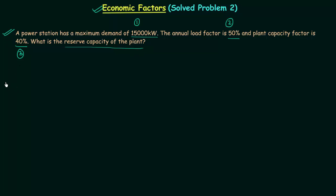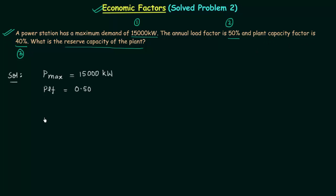First, I will write down the given information. The maximum power Pmax is 15,000 kilowatt. The annual load factor is 50%, which means the plant load factor is equal to 0.50. The plant capacity factor is 40%, so the plant capacity factor is 0.40. Using these we will calculate the reserve capacity of the plant.